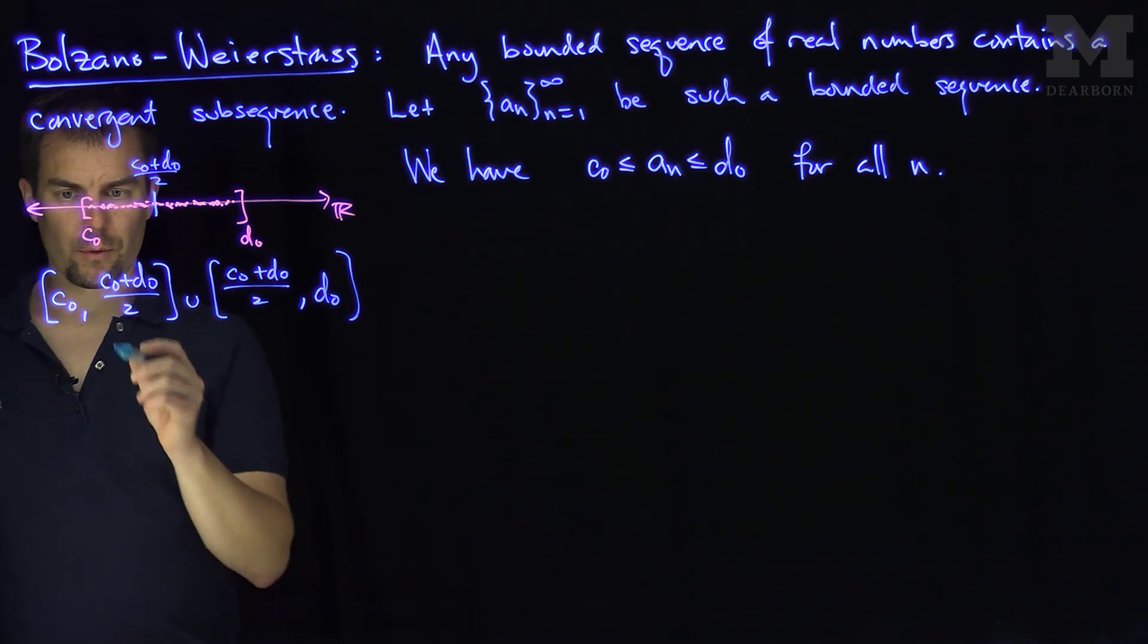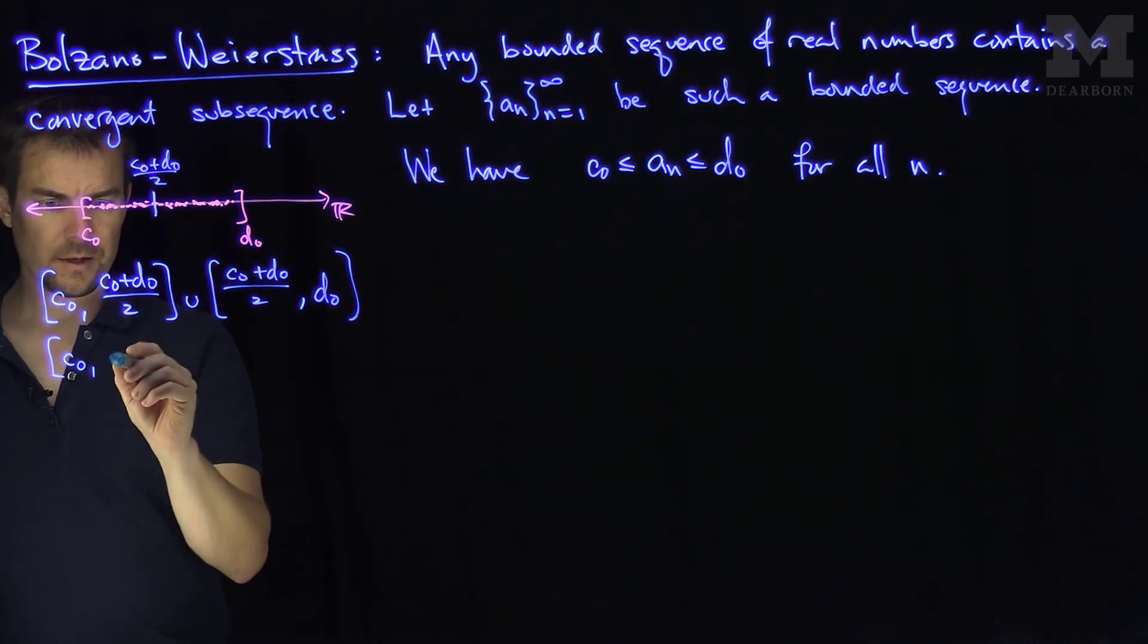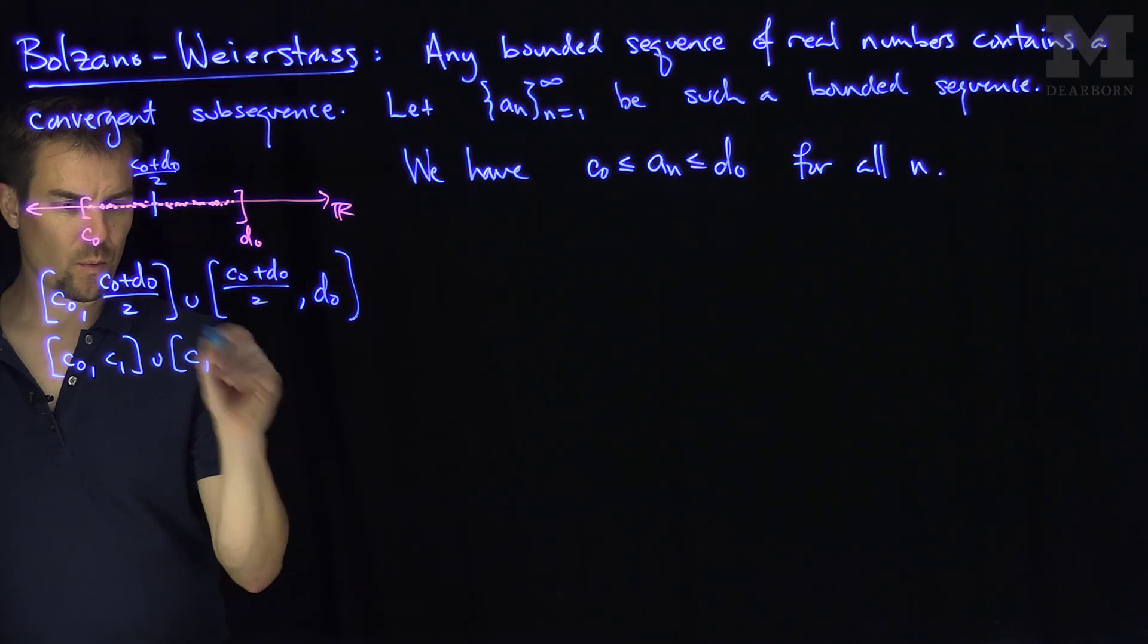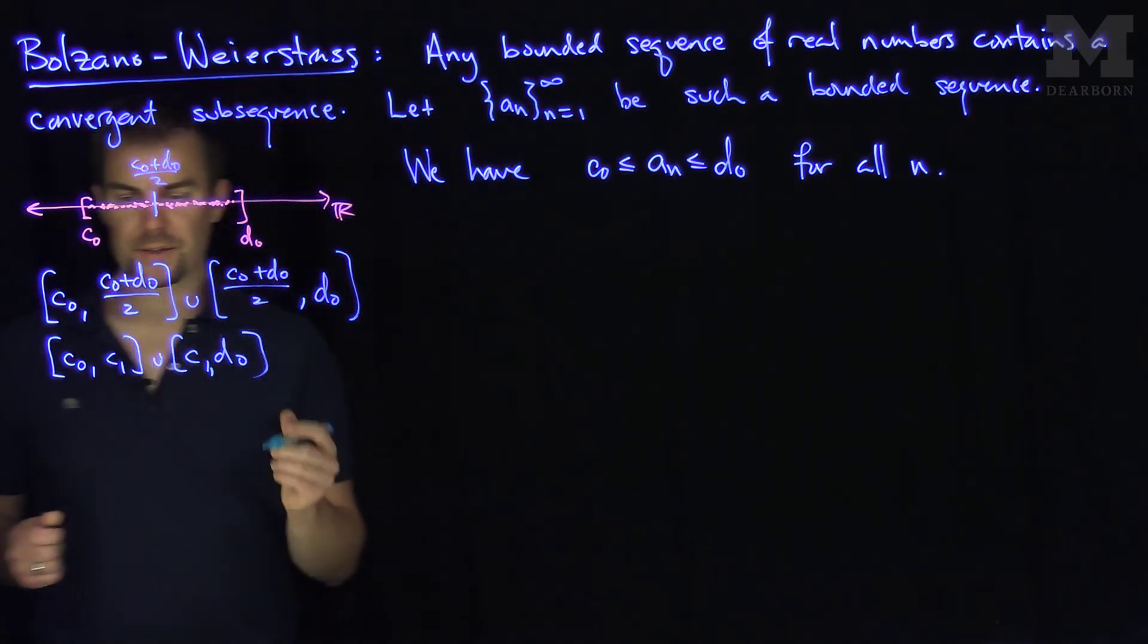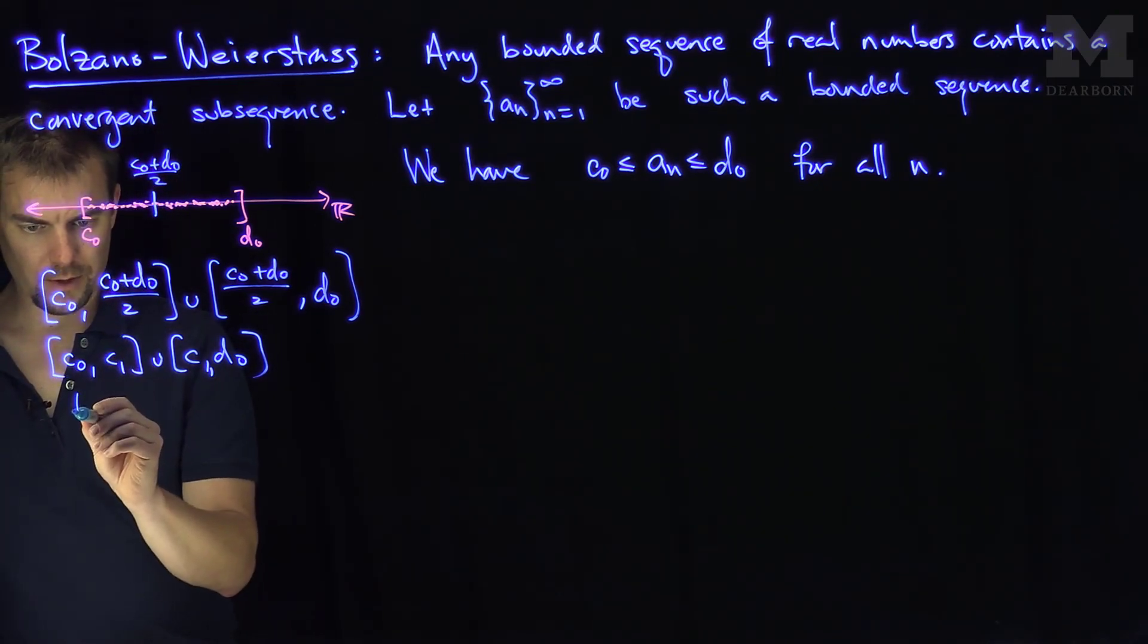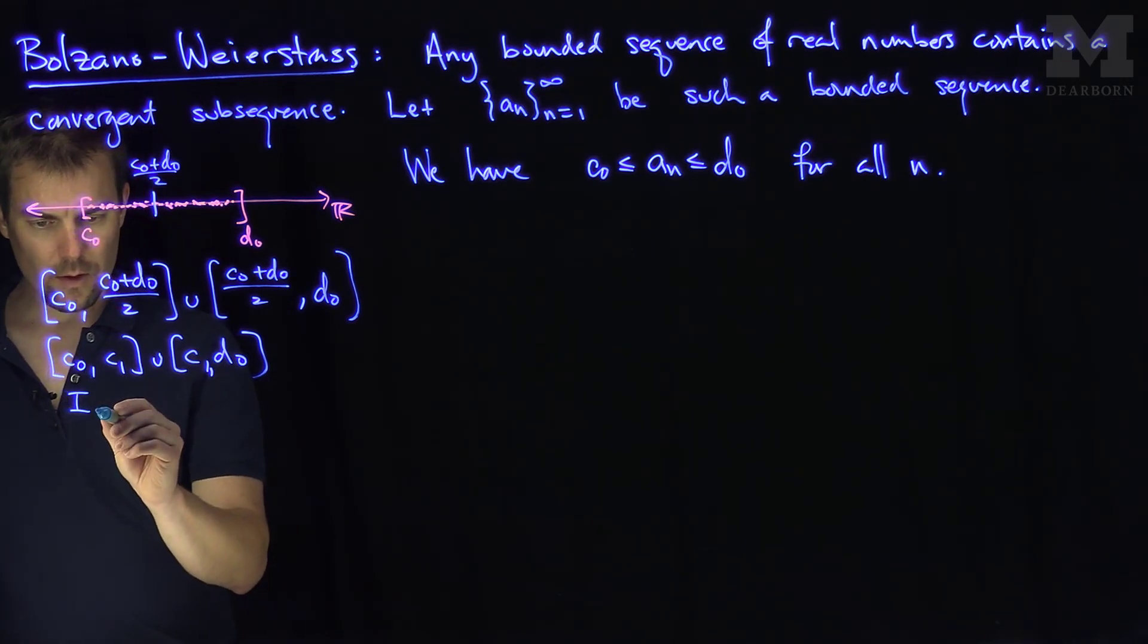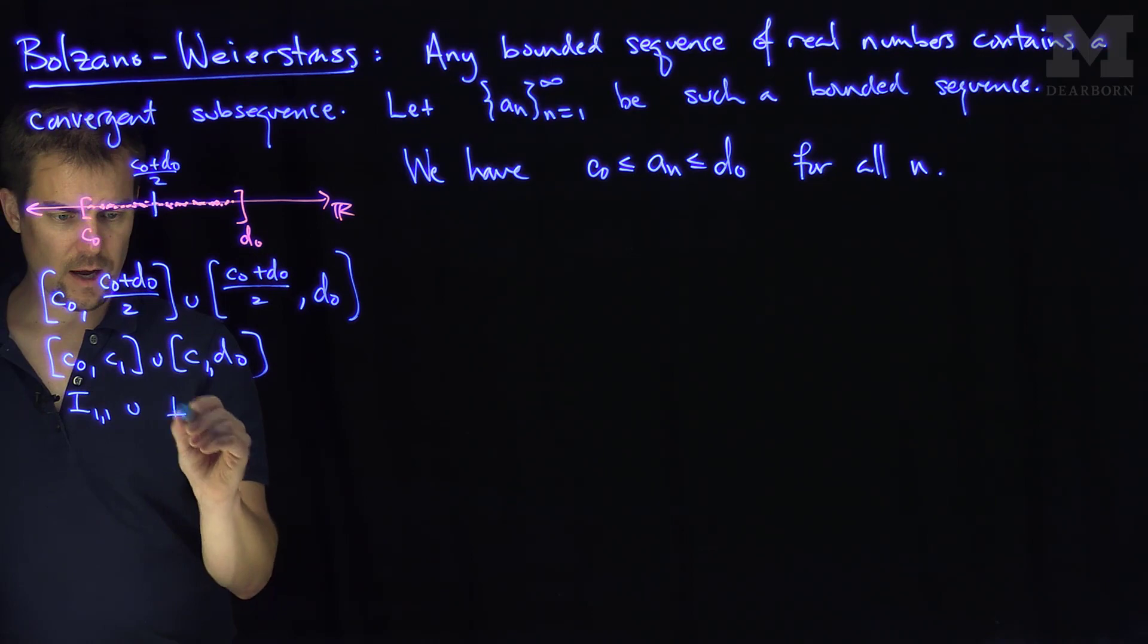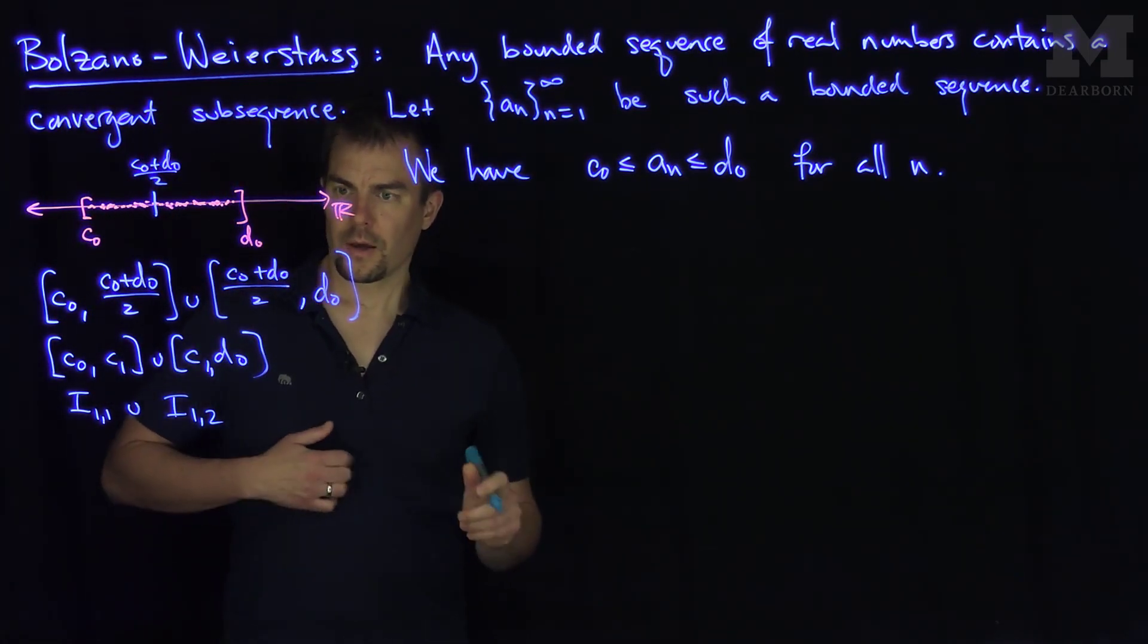And now we claim, if I call this interval over here, let's call this point c1 union c1 to d0, okay? And so we'll call this interval over here i11 union i12.